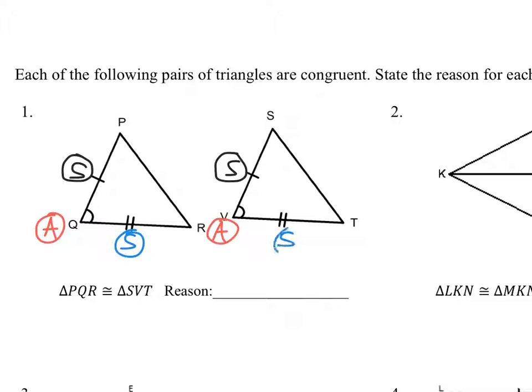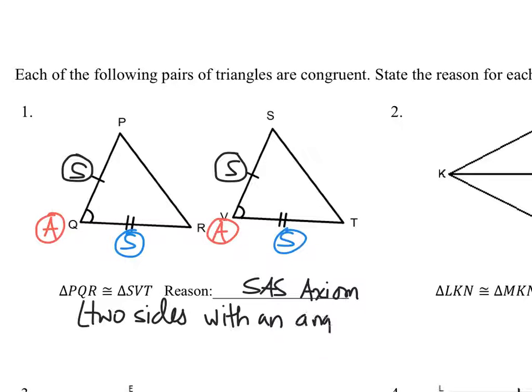So the definition of SAS, the SAS axiom, is two sides with an included angle. But I'm going to say two sides with an angle in between them.